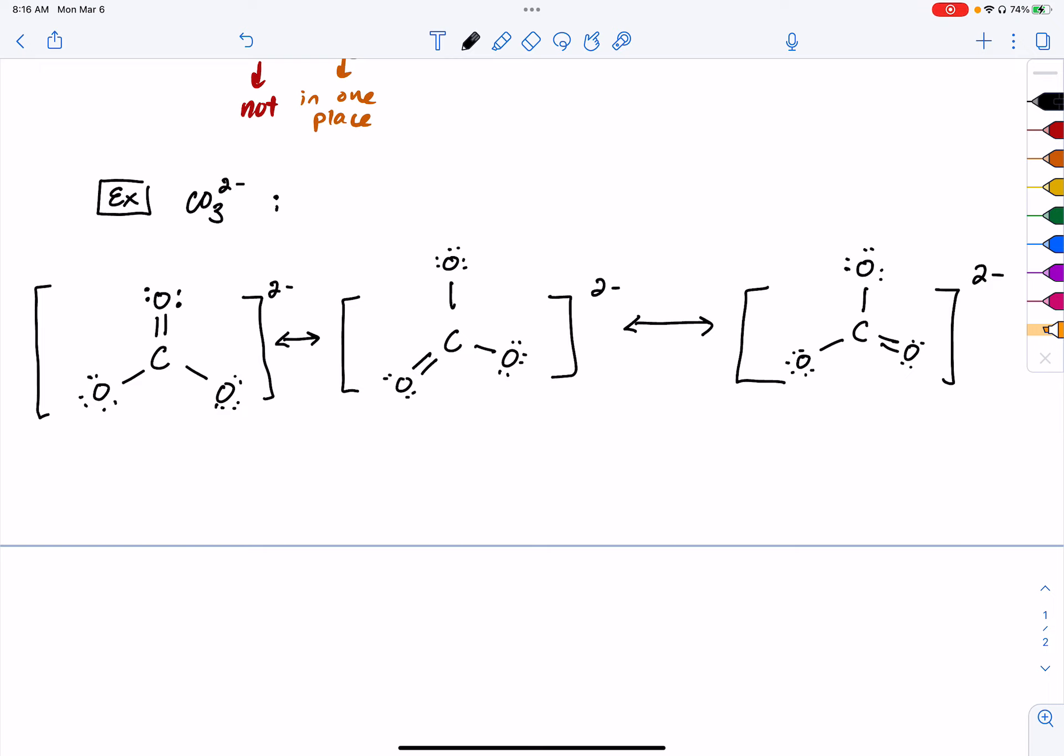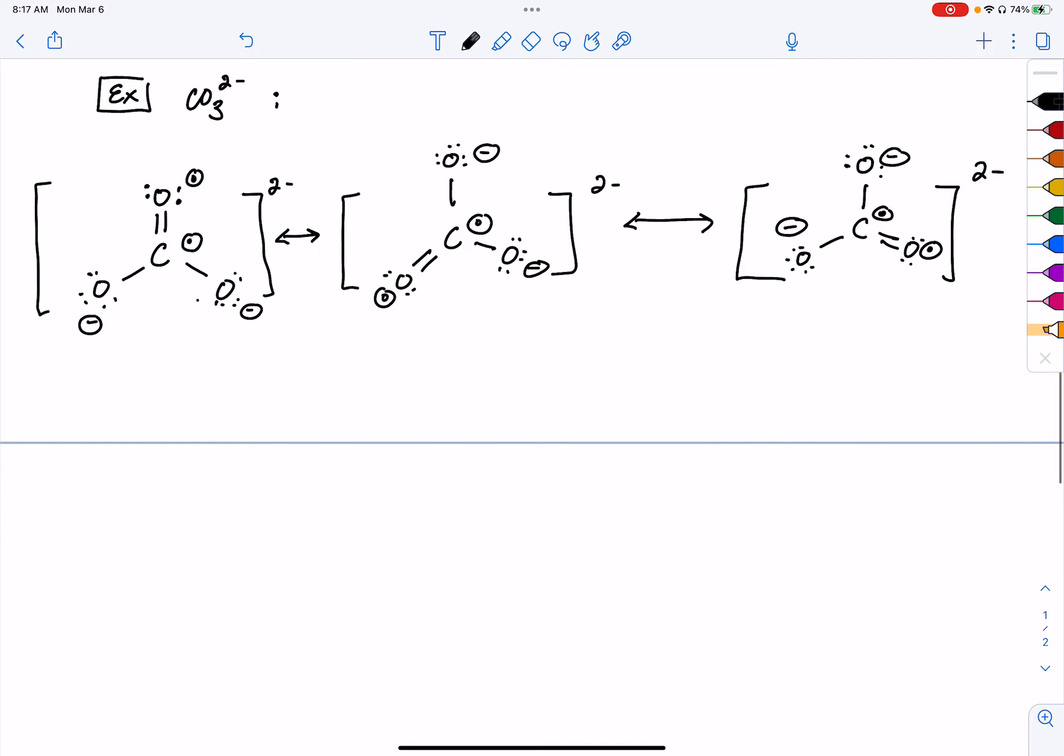So if we were to do some formal charge calculations on each of these carbons and each of these oxygens in all three of these different resonant structures, we would find that they would all give us more or less the same. The only difference would be kind of like our rotation in 3D space. So you would see a zero formal charge on the carbon. You would see a zero formal charge on the doubly bound oxygen. And then you would see minus 1 charges on each of the singly bound oxygens.